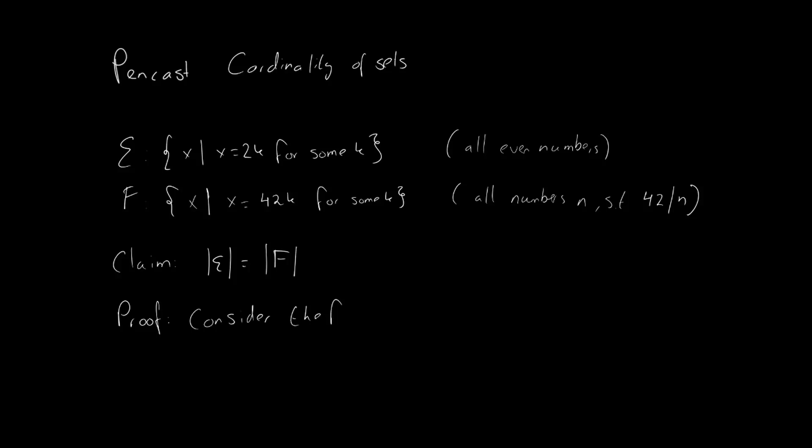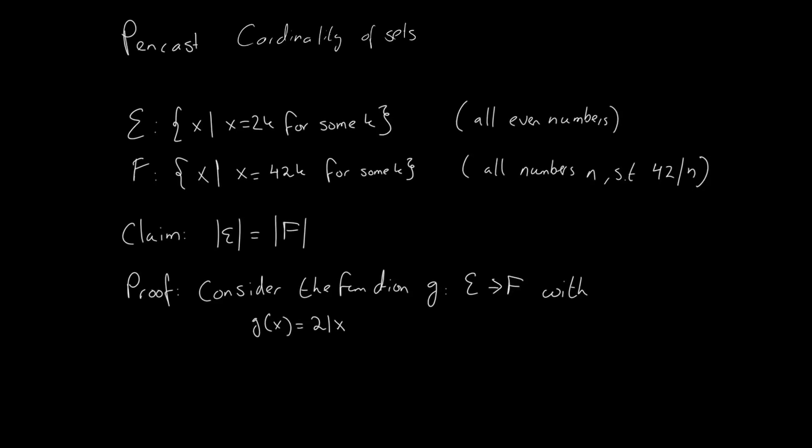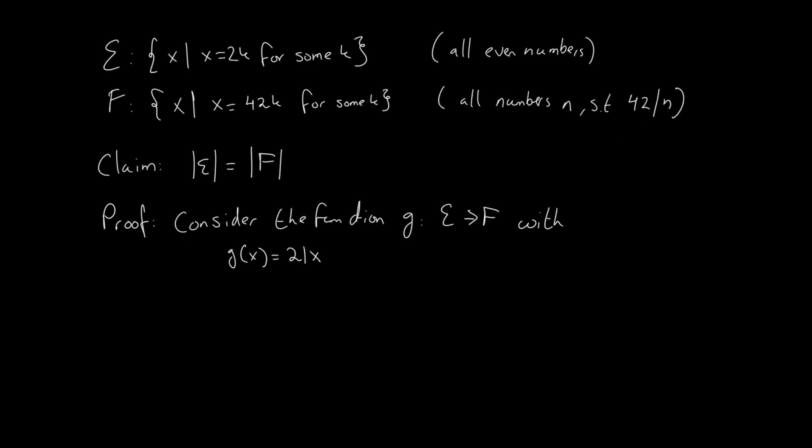Well for that we're going to use a function and might as well call this function g that maps our elements from the set E to elements from the set F. Now let's have g(x) be 21 times x and let's take a look at what happens.